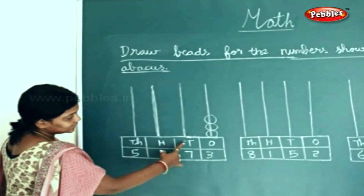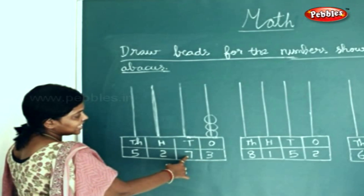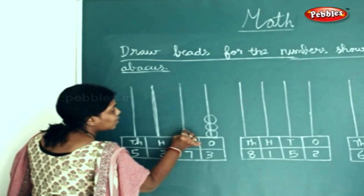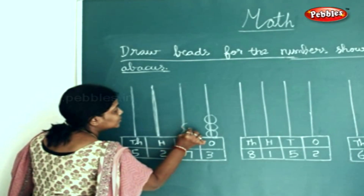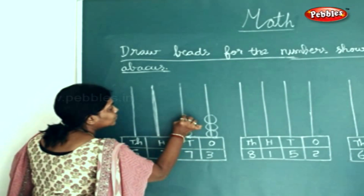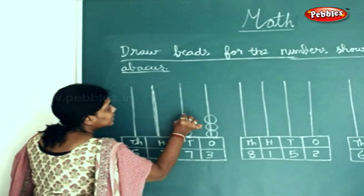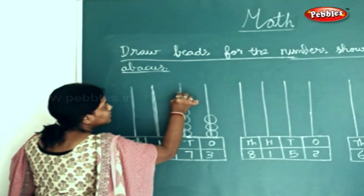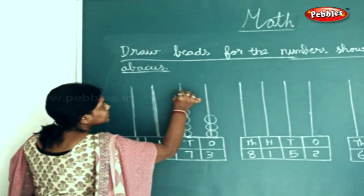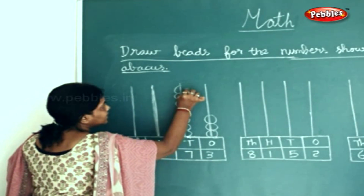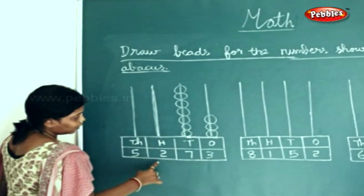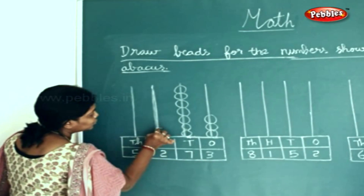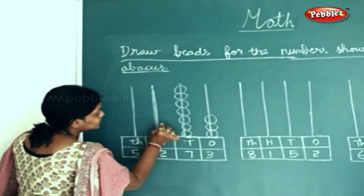How many in the 10s? 7. So we draw 7 beads: 1, 2, 3, 4, 5, 6, 7. How many in the 100s place? 2 beads.